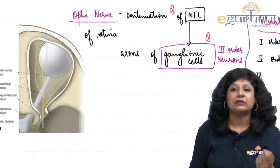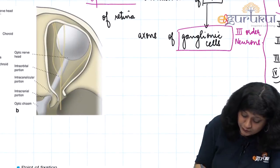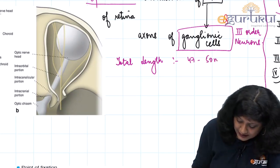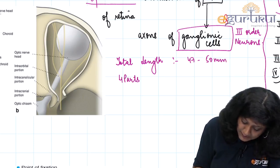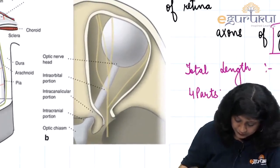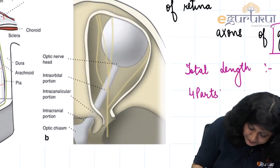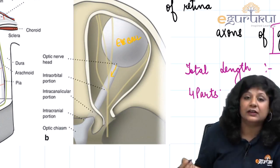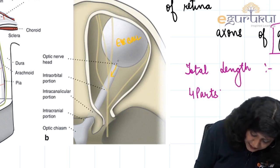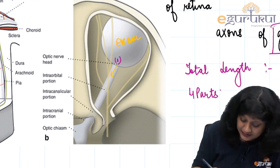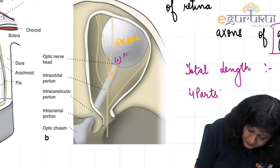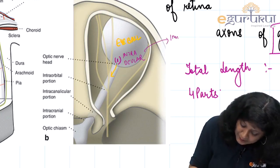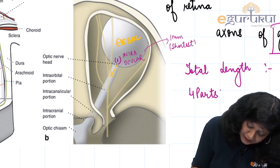Another important thing is the length of the optic nerve. The total length is about 47 to 50 mm and it consists of four parts. The first part is the optic nerve head, also called the intraocular part, which is 1 mm — the shortest part of the optic nerve. Another important MCQ.